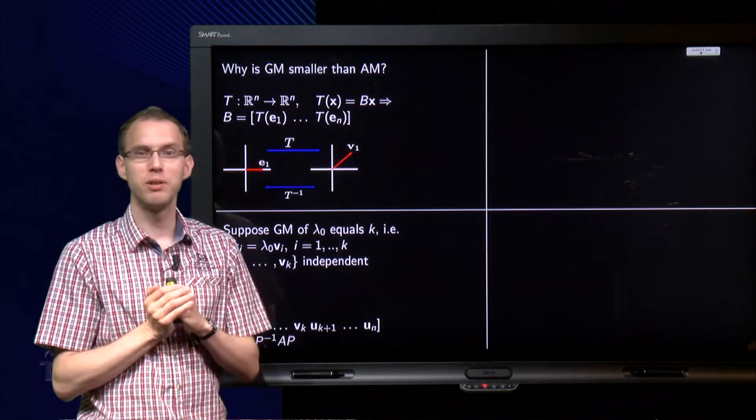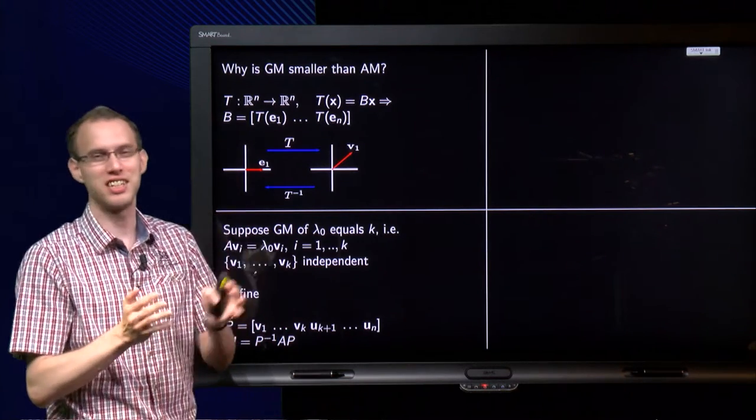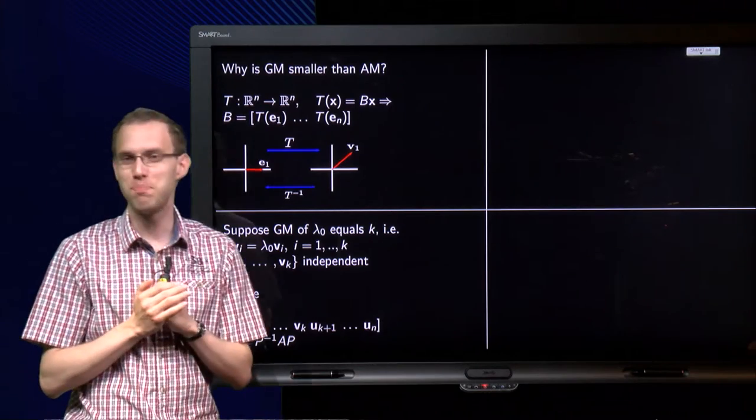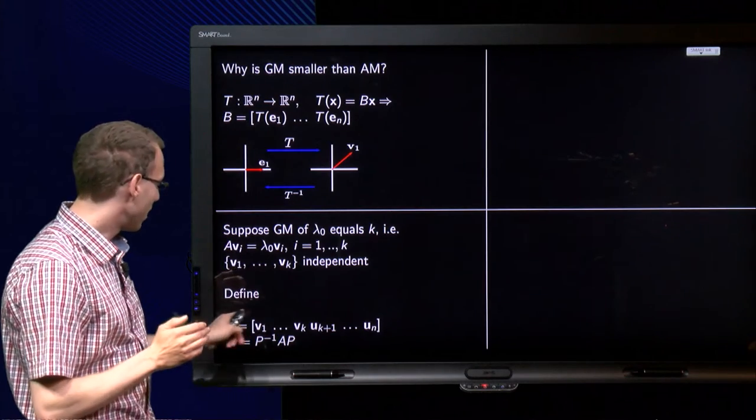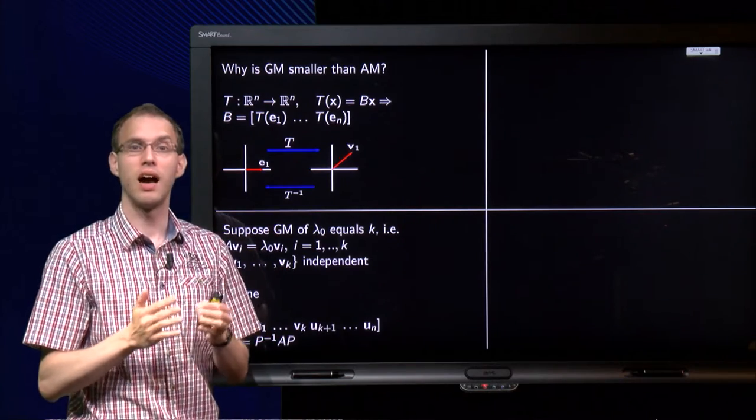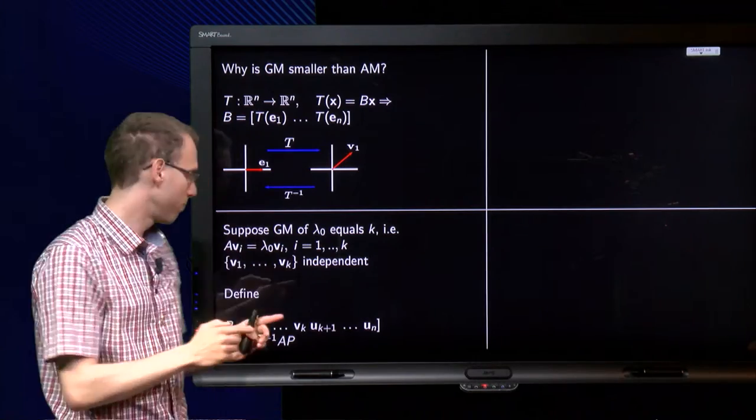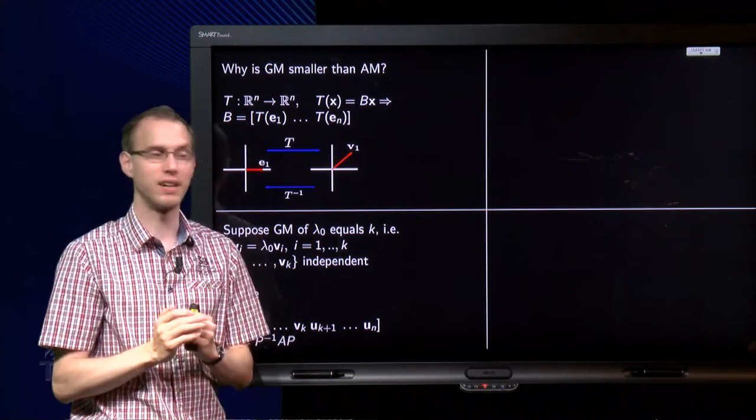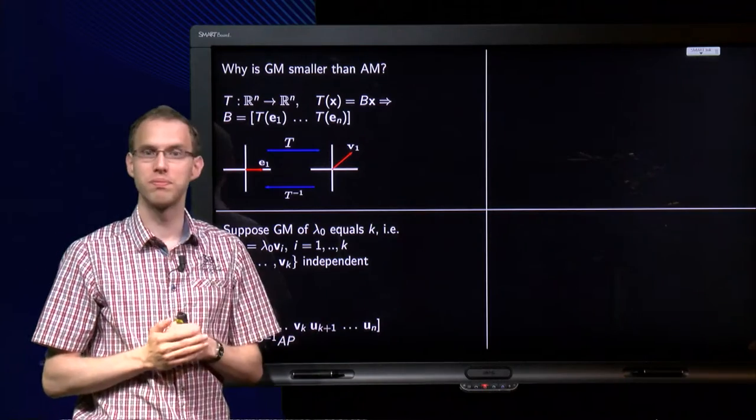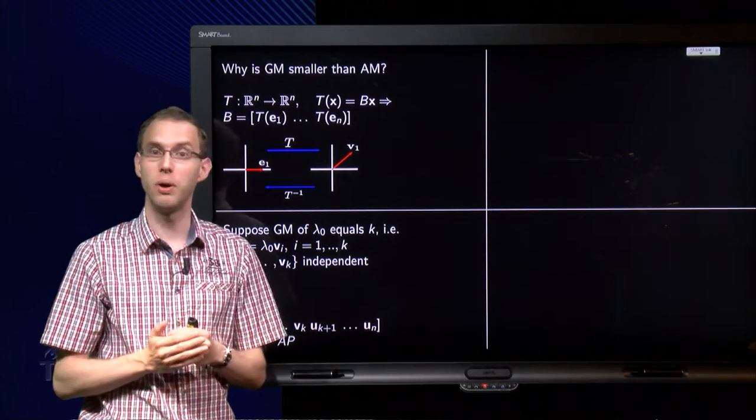And then we are going to do a, well, you could call it a nasty trick. I think it is a nice trick. We find this matrix P as follows. We put as first columns the k eigenvectors. I want to have n by n matrix P, and I want it to be invertible. So first columns are just the eigenvectors. And for the other ones, well, I don't care.